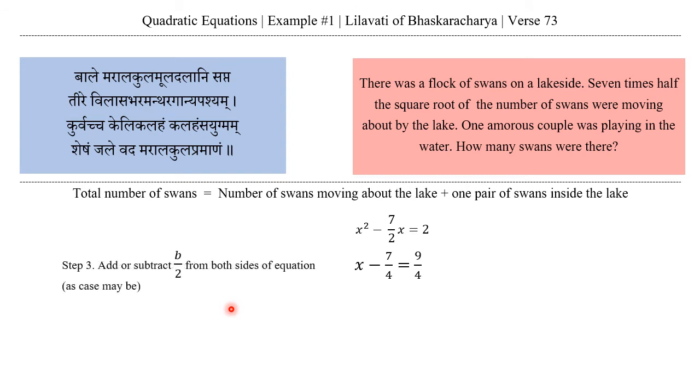Step 3: Add or subtract b upon 2 from both sides of the equation as the case may be. In this case, it is x minus 7 upon 4, so b upon 2 is 7 upon 4. On the left-hand side, we have x minus 7 upon 4. To eliminate this minus 7 upon 4 from the left-hand side, we add 7 upon 4 to both sides of the equation. This is what we get.